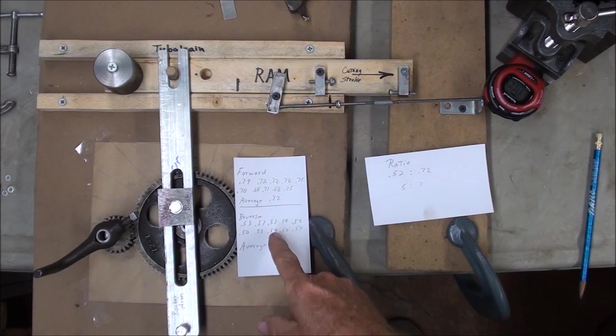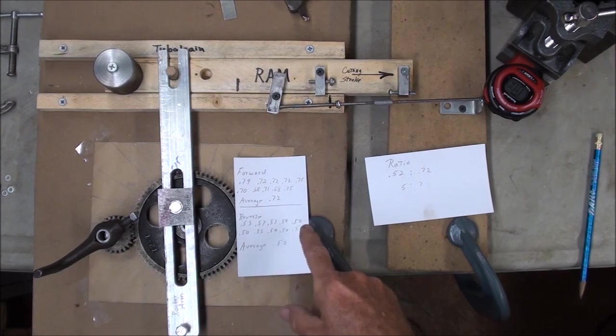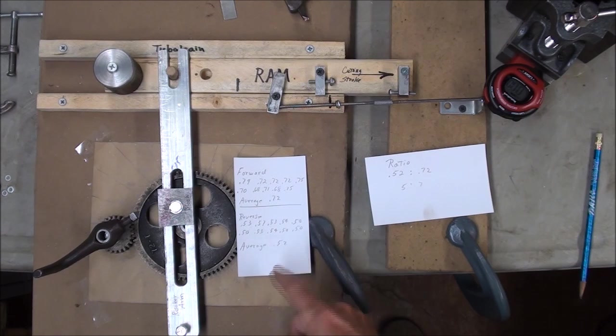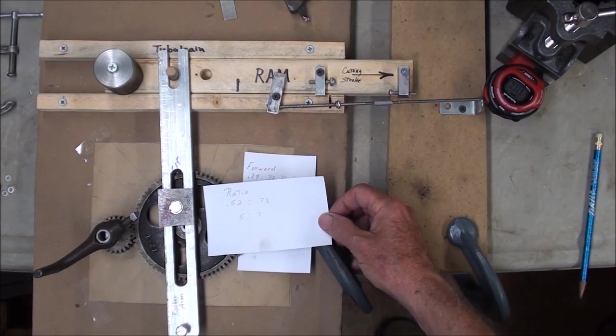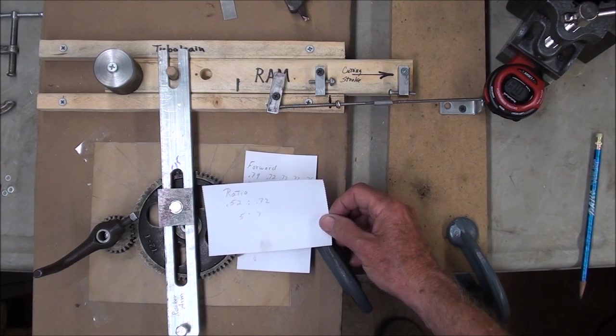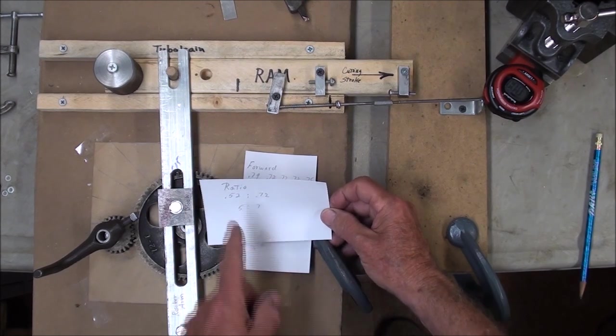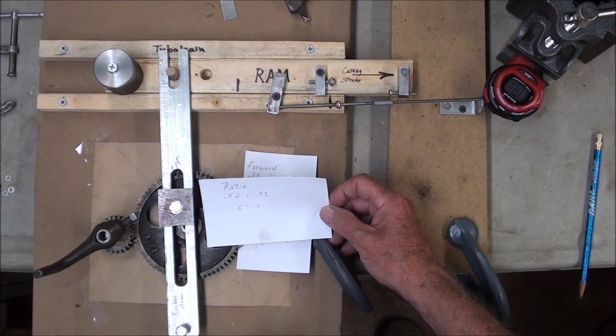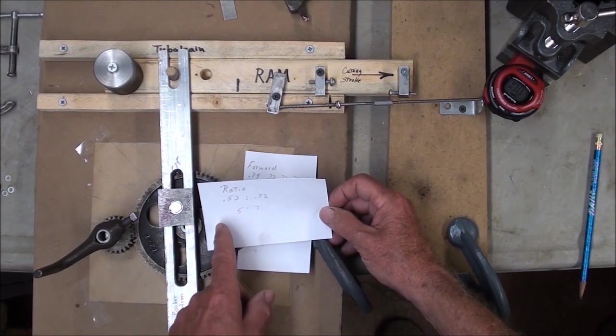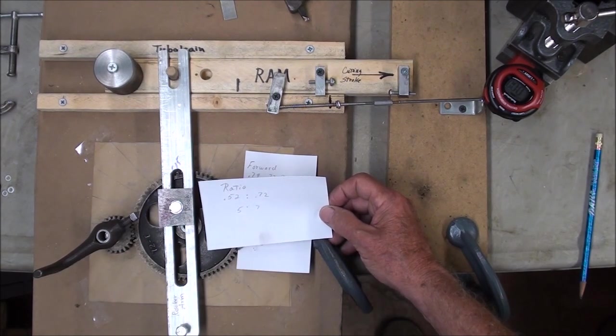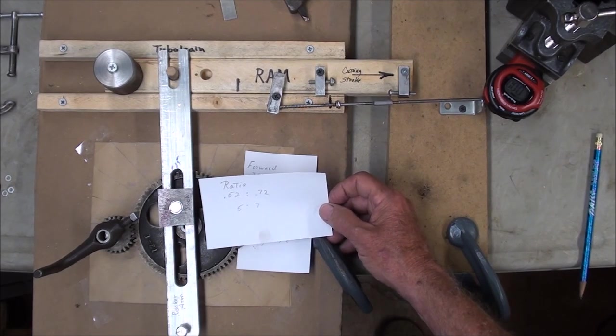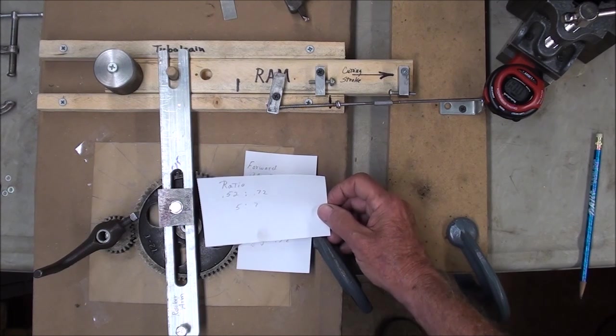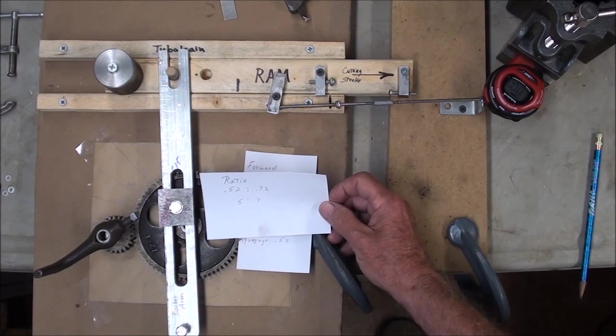I took ten readings on reverse. There they are. And that's an average of .52 seconds, which is about a half a second. So that's a ratio of .52 to .72. And removing the twos there, arbitrarily, because they don't amount to too much, gives me a ratio of about five to seven, as far as the forward motion is to the reverse motion. So it's faster in the reverse, saving time and increasing productivity.